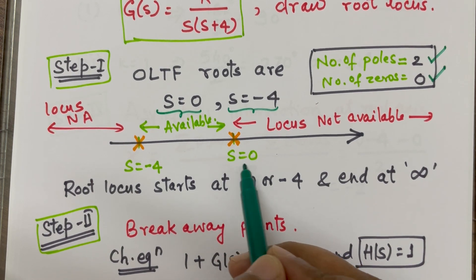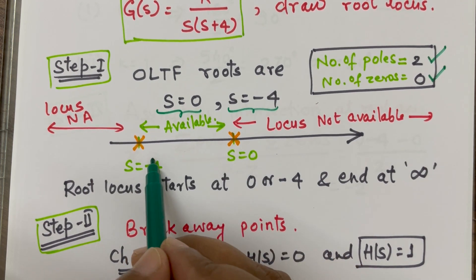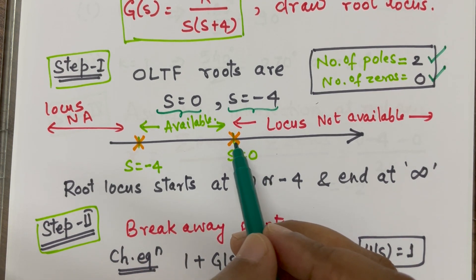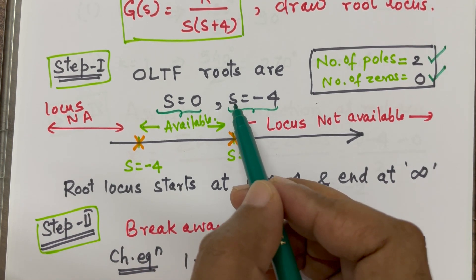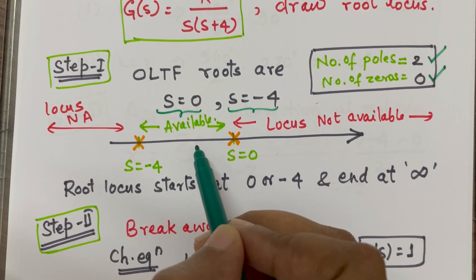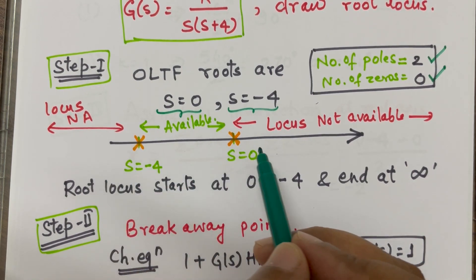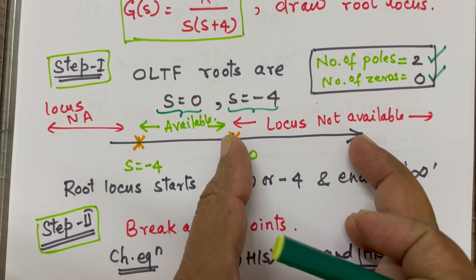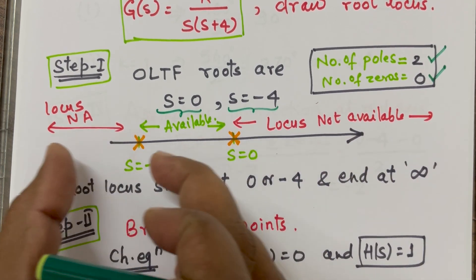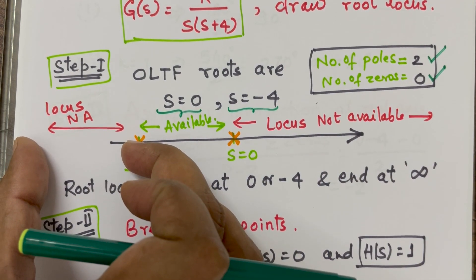So, here we have s equal to 0, for example, then here will be s equal to minus 4. So, we need to see in the right hand side of each zone. So, this can be divided in three zones. This zone, this one and left side of this.